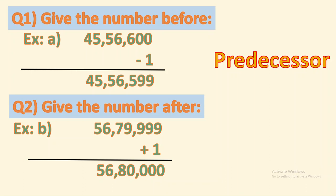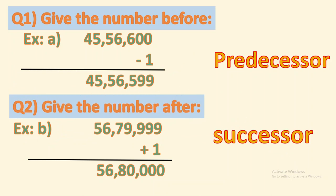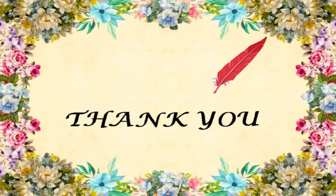To give the number after, the number is 56 lakh 79,999. Adding 1 gives 56 lakh 80,000. The other name for number after is successor. That covers all the concepts for today. Thank you very much, children, for patiently listening. If you have any doubts, you can ask me now. Have fun with maths and enjoy!